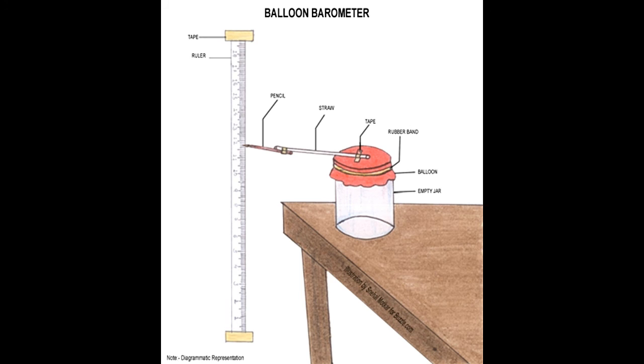Step 4 - Now take the straw and tape it at the center of the balloon. You will see some part of the straw outside the jar at a particular distance from the ground. Step 5 - Take a ruler and tape it on the wall.